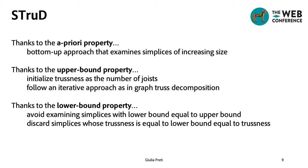Finally, thanks to the lower bounds, we can avoid examining simplices with lower bound equal to the upper bound, and moreover, we can discard from the solution all the simplices with trussness equal to the lower bound. This is because the lower bound can be computed in polynomial time, and so we can compute these trussness values afterwards if needed, and removing these simplices from the result allow us to obtain a more compact set.